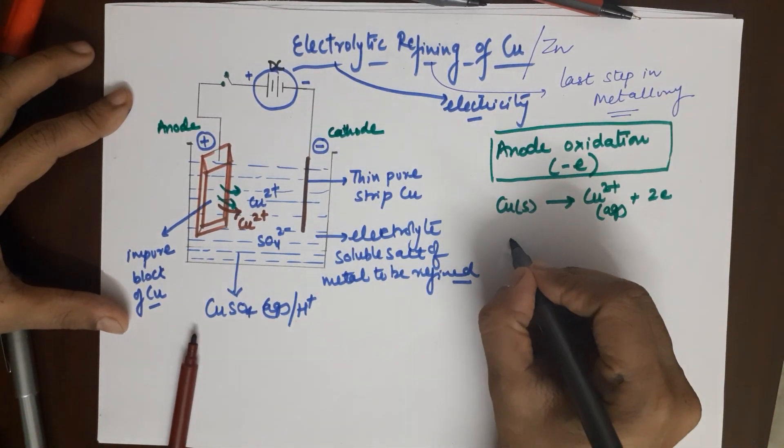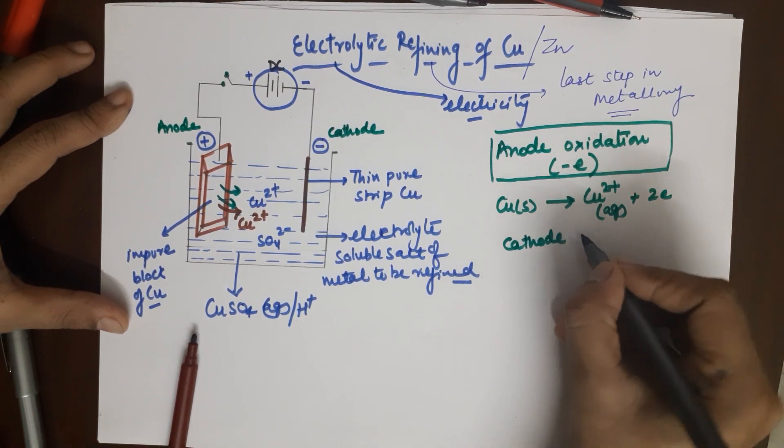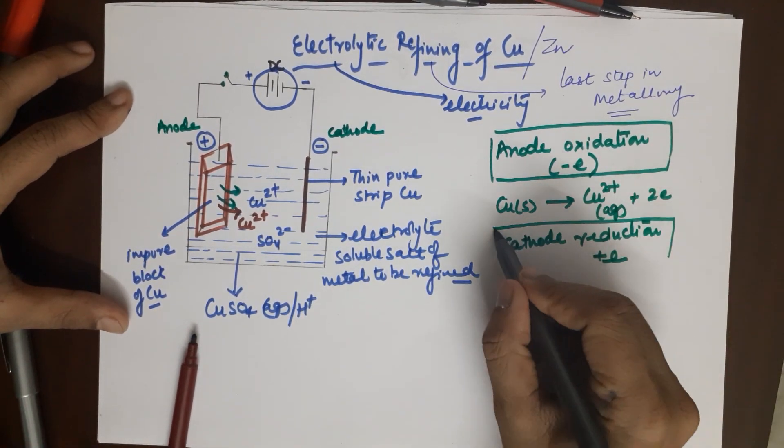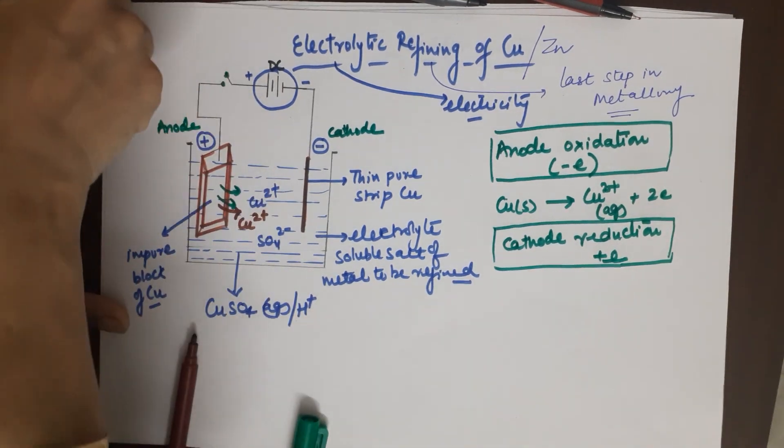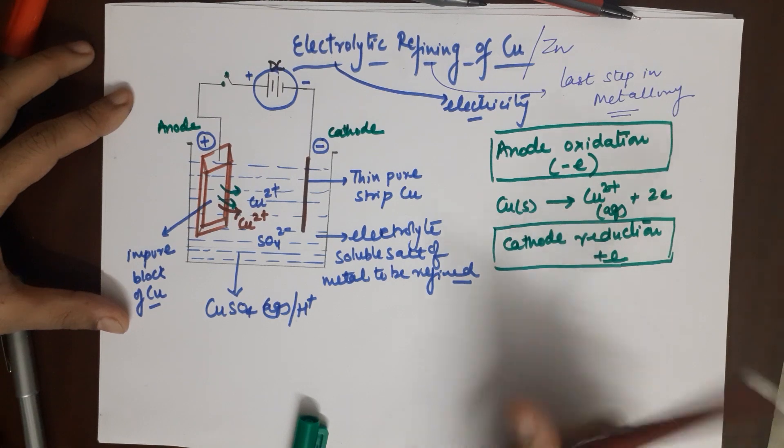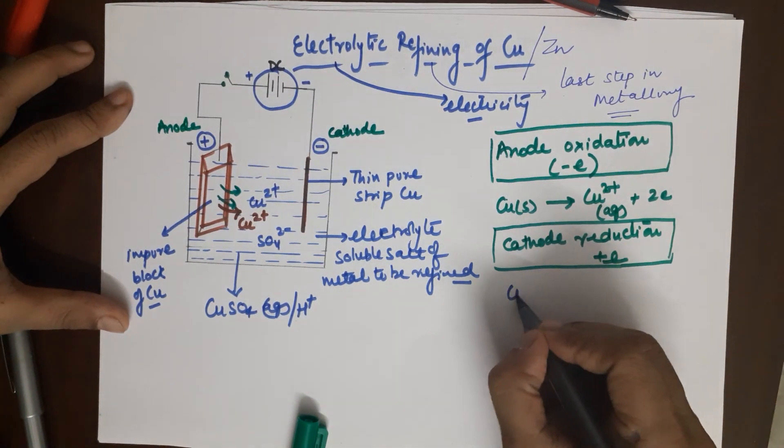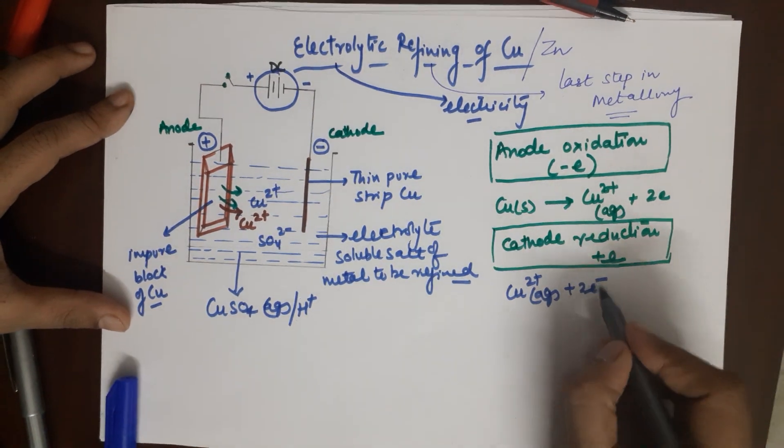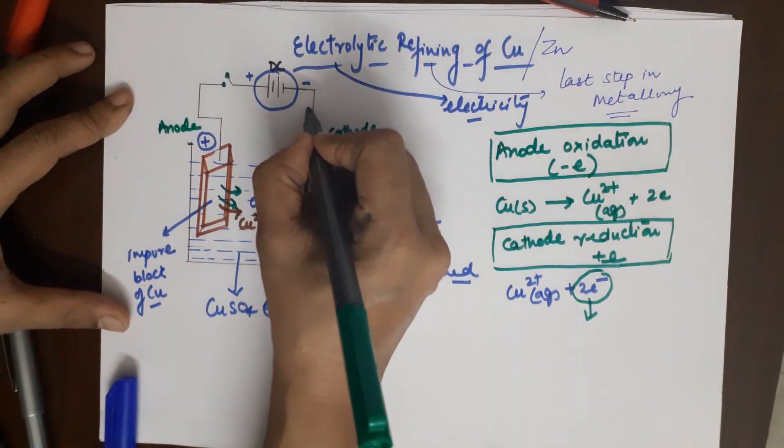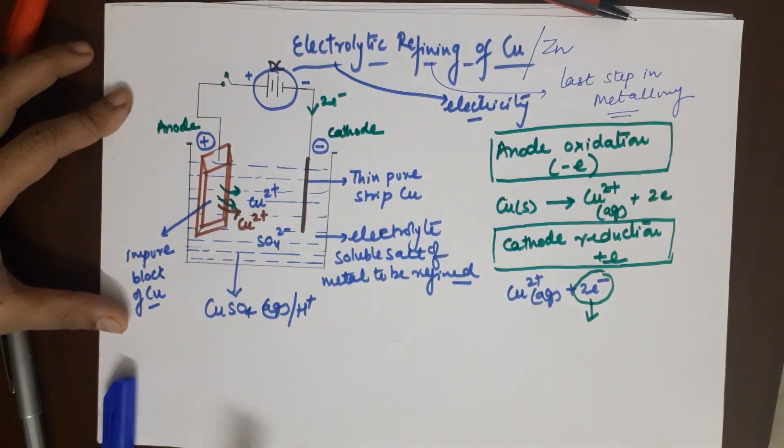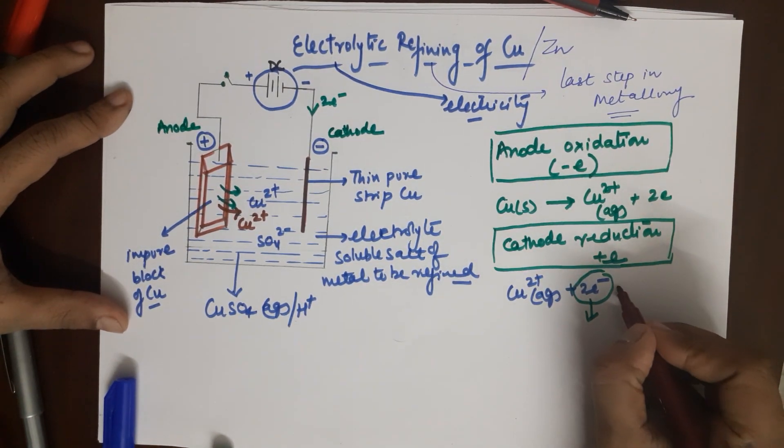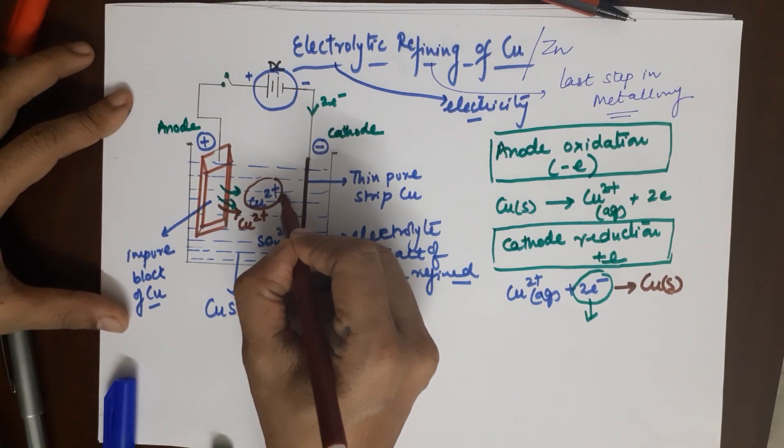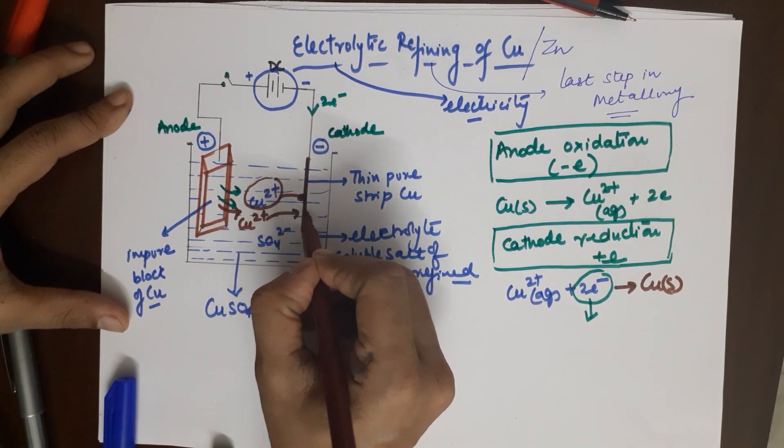What happens at the cathode? At cathode you always have reduction, and reduction always means gain of electron. Your copper two positive ions from the aqueous medium which is blue accepts the two electrons. Where do you get these two electrons from? These electrons are coming from your battery. The two electrons move and the copper accepts them to become copper solid which is reddish brown in color.